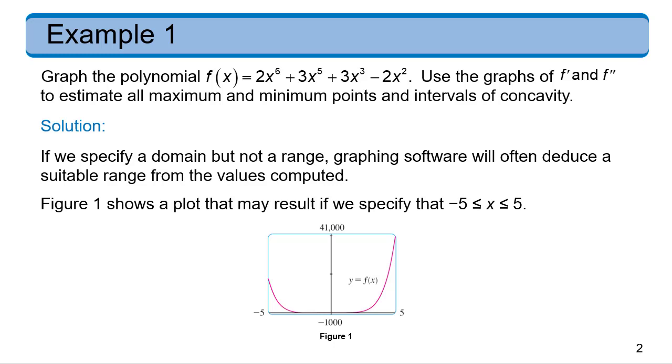Now, if we specify a domain but not a range, most graphing software will just pick what is best. And so for this first figure, we just chose negative 5 to 5 for our x. And we get a pretty dull, boring graph. It doesn't seem like much is happening.